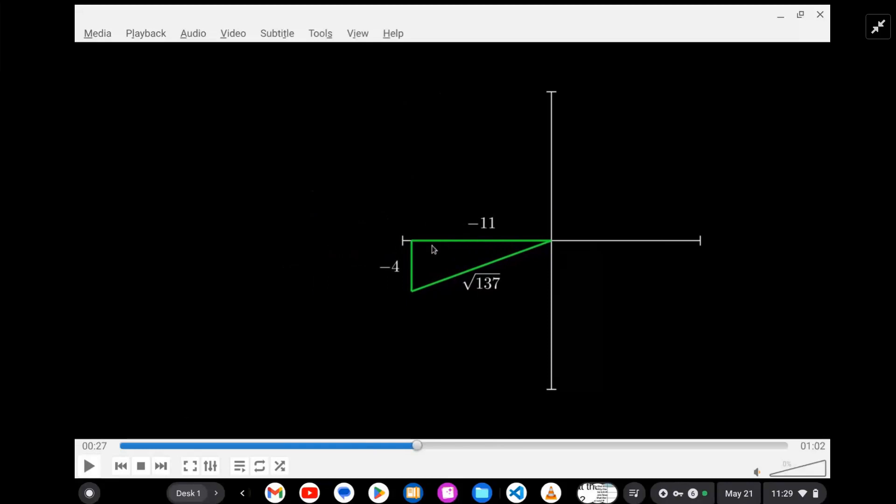Okay, so we have our triangle. That gives us a tangent of 4 over 11. And then we can also get any trig ratio from there. So we'll write down the sine and the cosine.